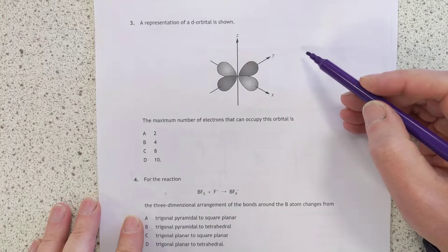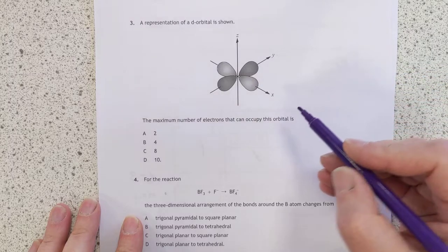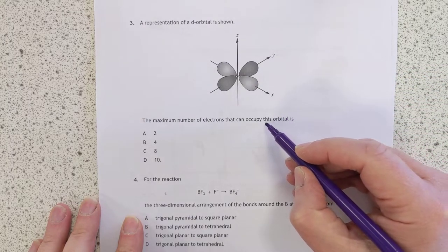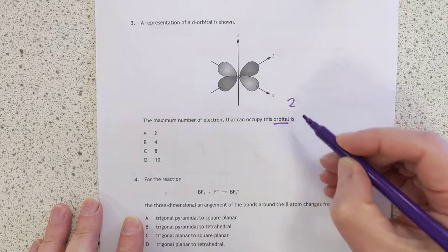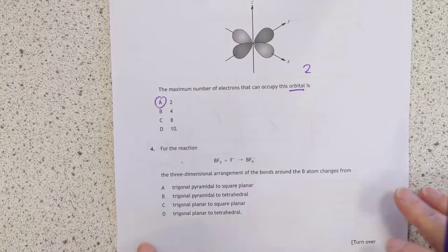Representation of a D orbital. The maximum number of electrons, oh, sort of trick question. They're just checking any orbital. It says this orbital, but any orbital can hold a maximum of two electrons. That's the definition of an orbital.